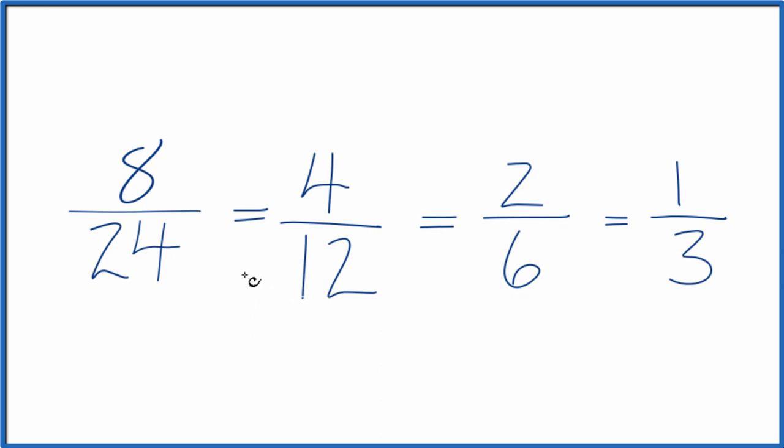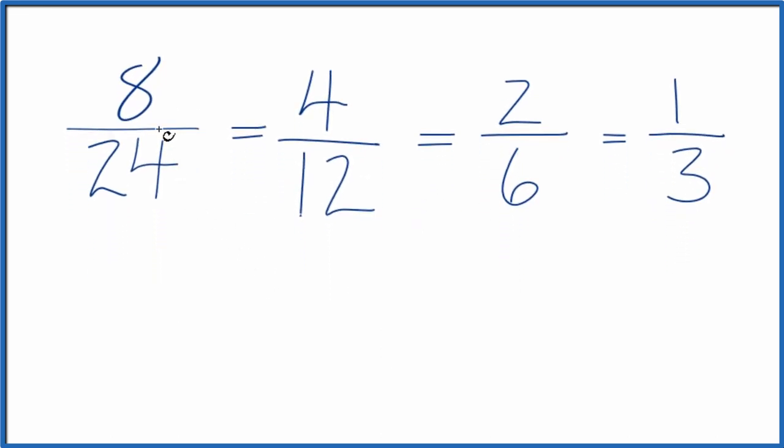Let's do one where we don't divide, but we multiply. So why don't we multiply the numerator and denominator by 2? We end up with 8 times 2 is 16. 24 times 2 is 48.